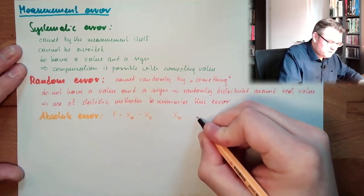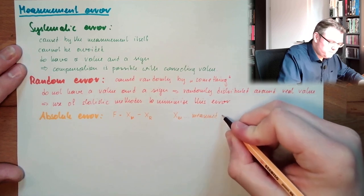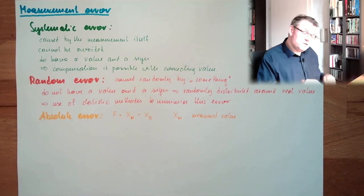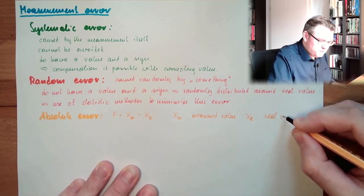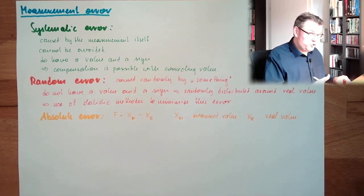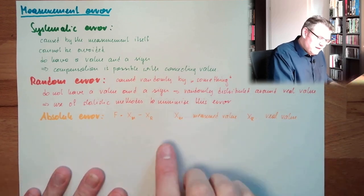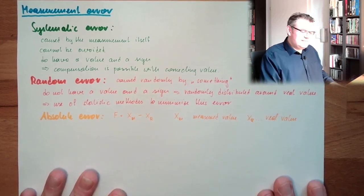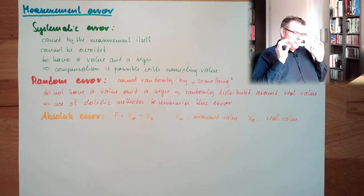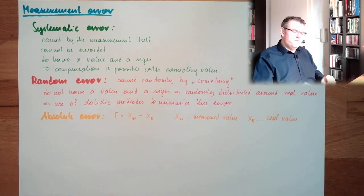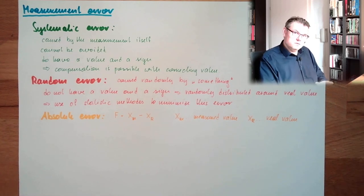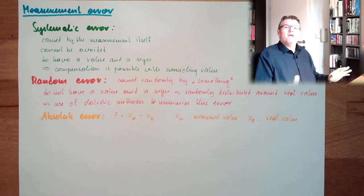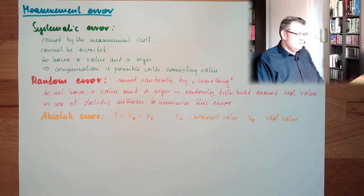Xm is the measured value — the value which my measurement system shows me. Xr is the real value — the value which my measurement system should have shown me if it showed the real value of the quantity I want to measure. The absolute error has the same unit as the measured value. If I measure length, the length is given in meters and the absolute error is also given in meters — same unit.